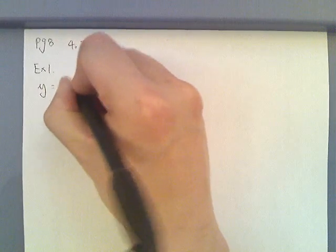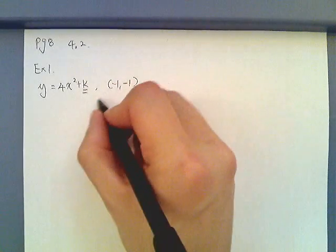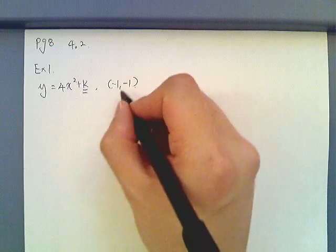We have example 1. Now we have y equals 4x squared plus k and with a point of negative 1 comma negative 1. It says find what the k is.